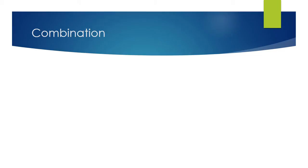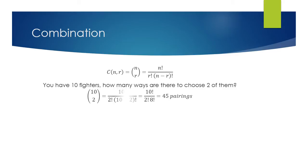Now we want to move on to combinations. So like I said, combinations are ways of choosing something. So the formula itself is very similar to permutations, but we have the additional r factorial on the outside of our n minus r factorial. So let's take a look at this question. You have 10 fighters. How many ways are there to choose two of them? So plugging that directly into our formula, we find that we have exactly 45 pairings.